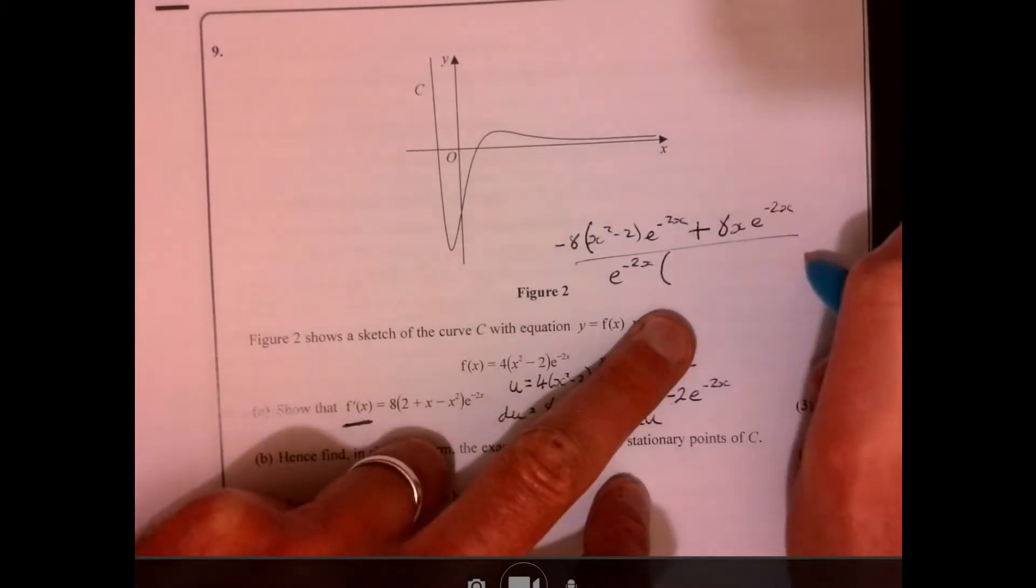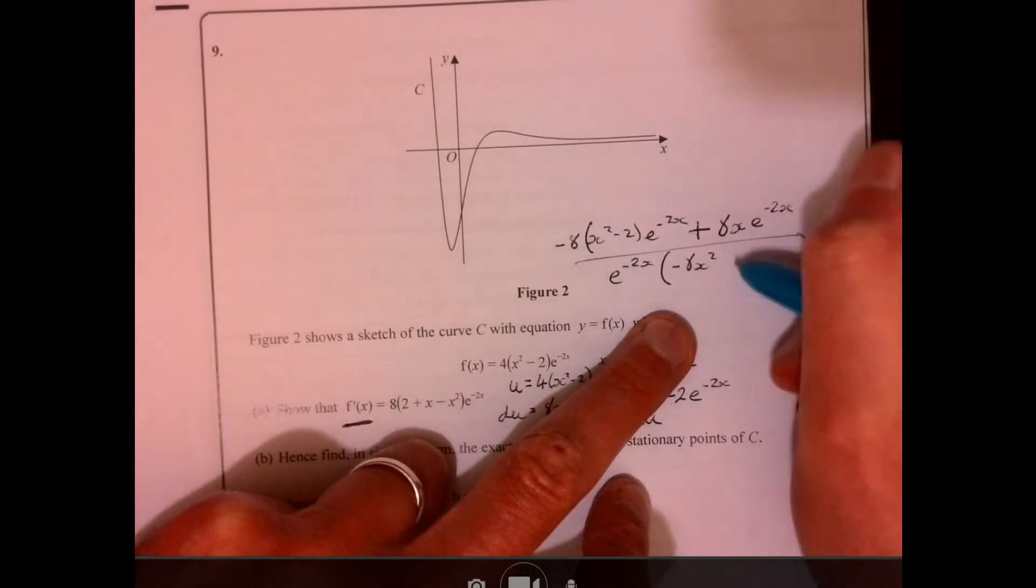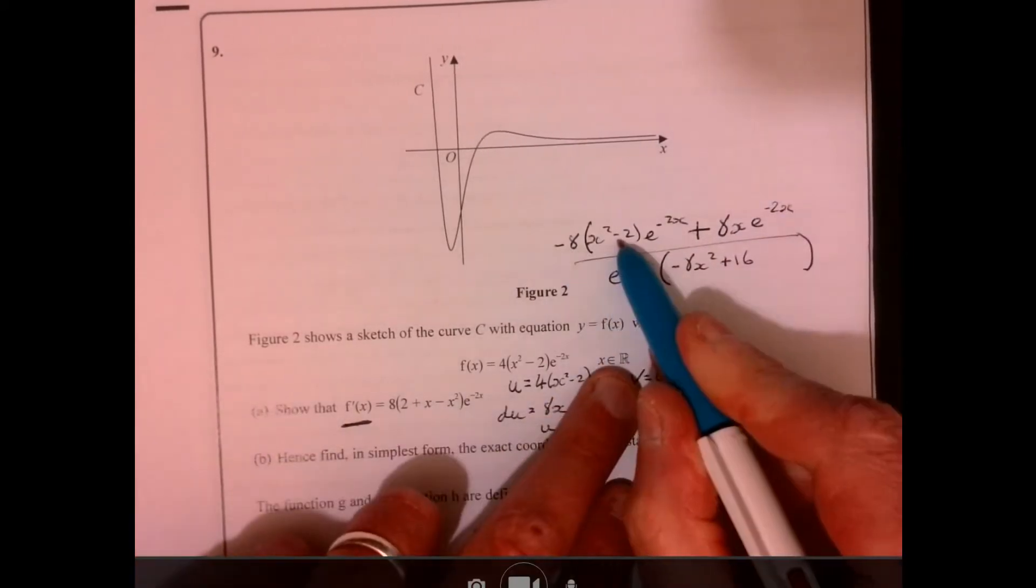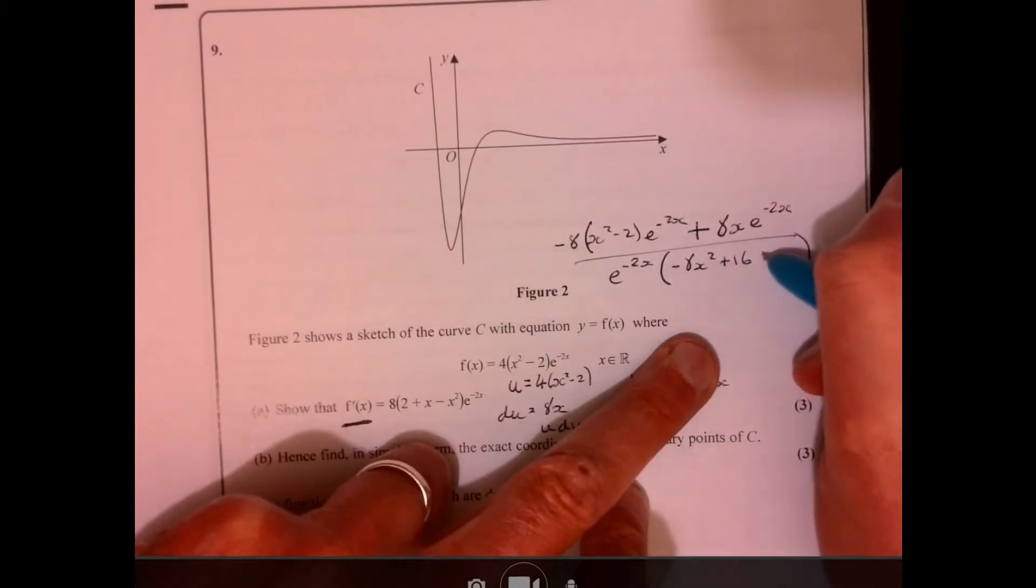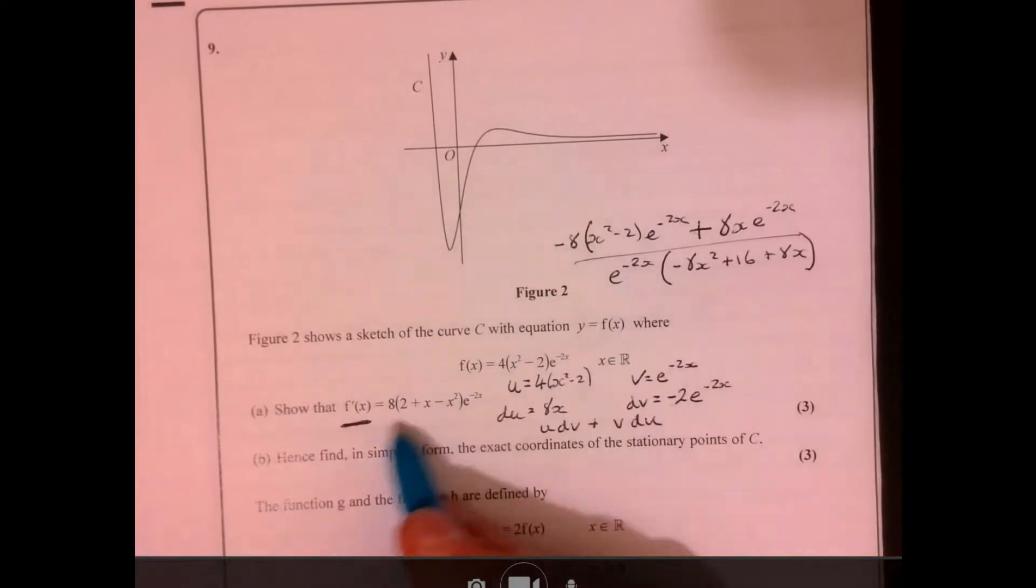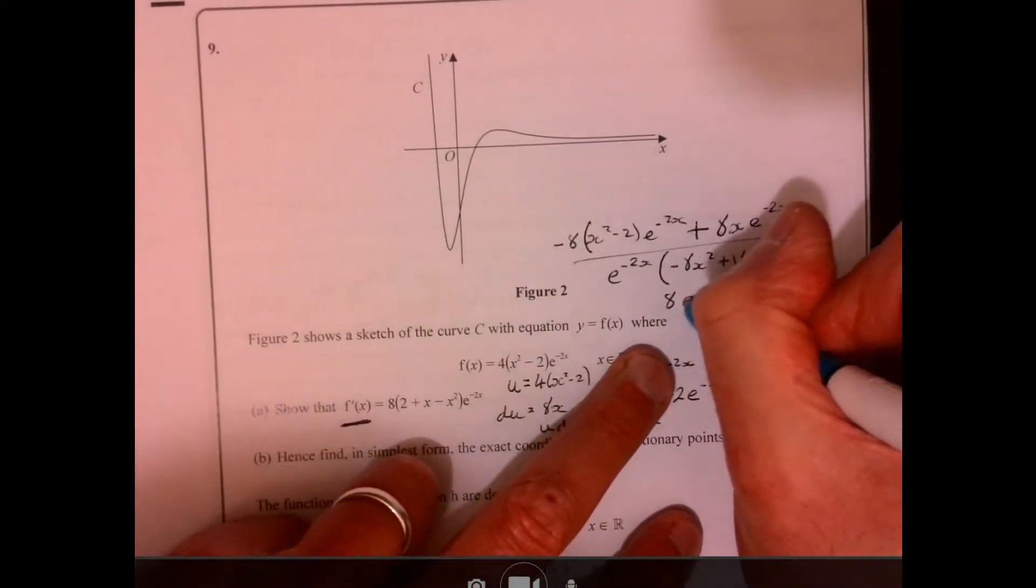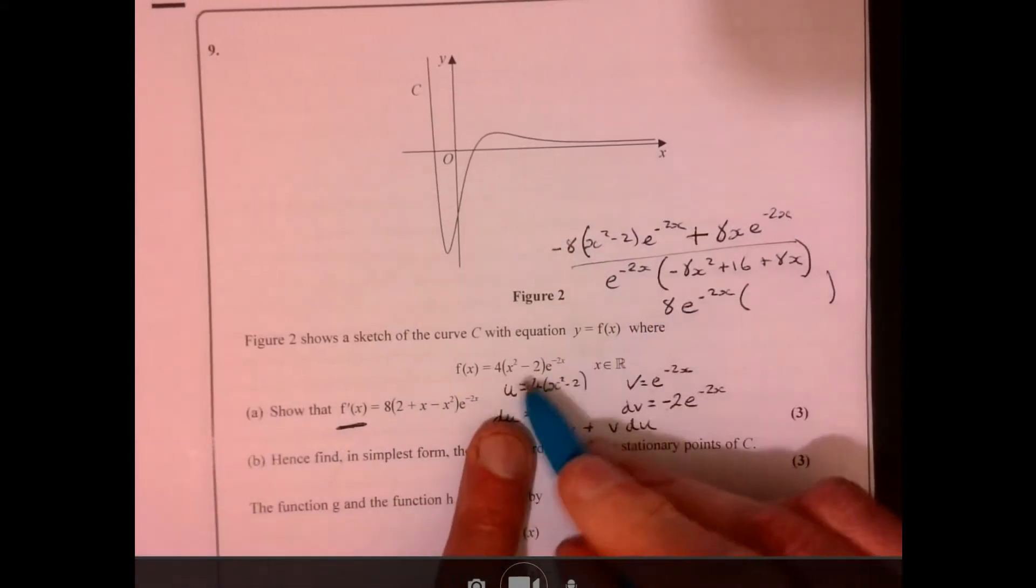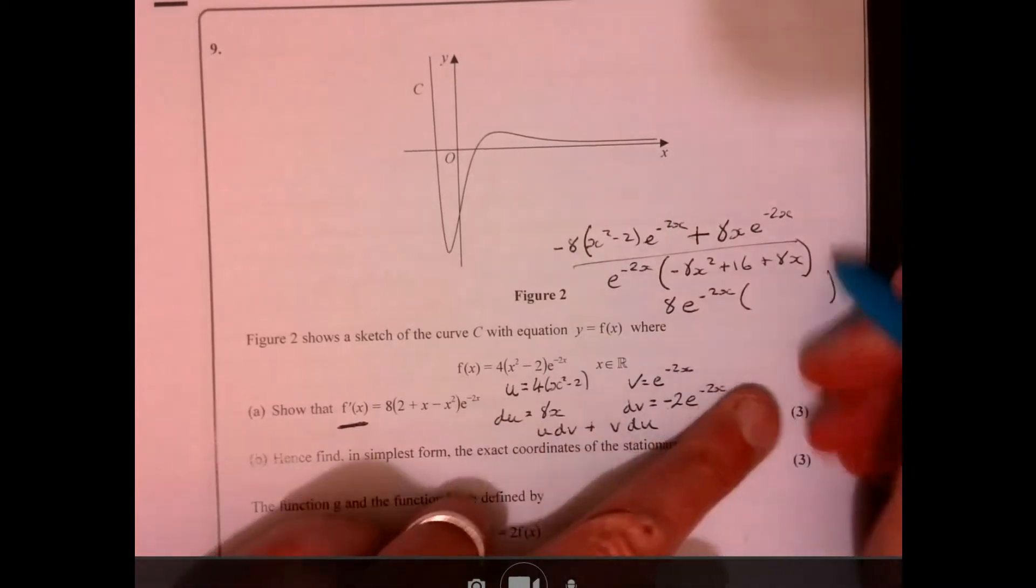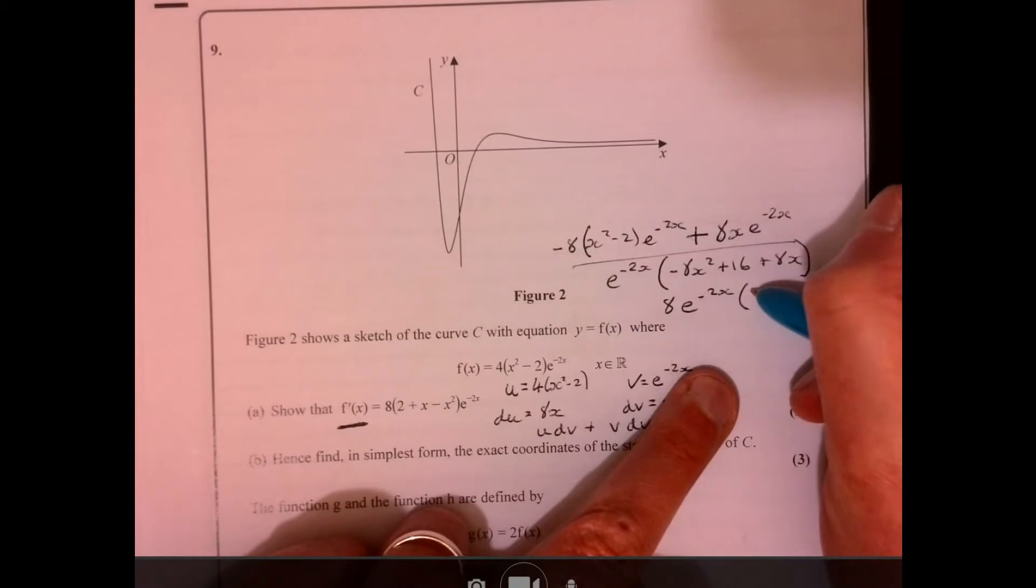That's going to give you, you've got minus 8x squared. You've got plus 16 just multiplying out this part here. And then you've got plus 8x there. Now, if we take out the factor of 8, just making it the same as this down here. If I then take out the factor of 8 as well. And they've written the x squared bit at the end because it's negative. There we go. We'll put that at the end.